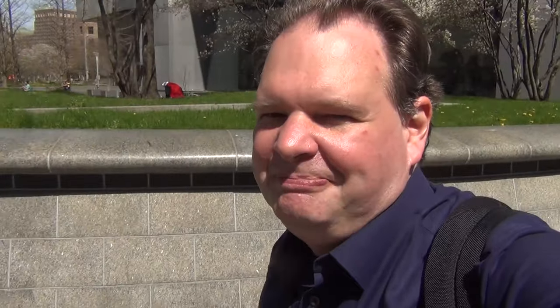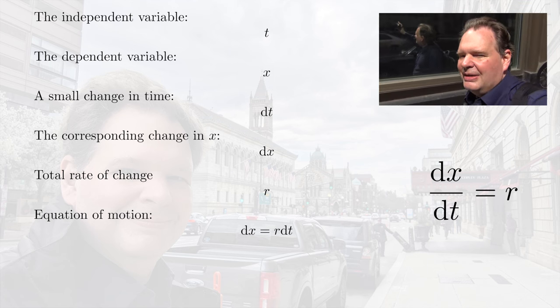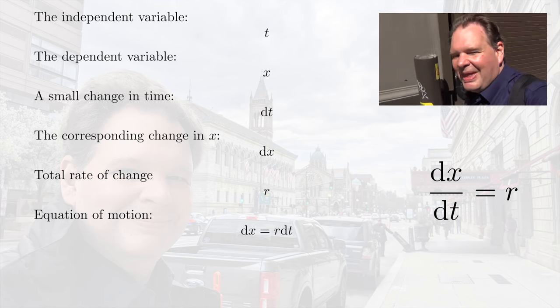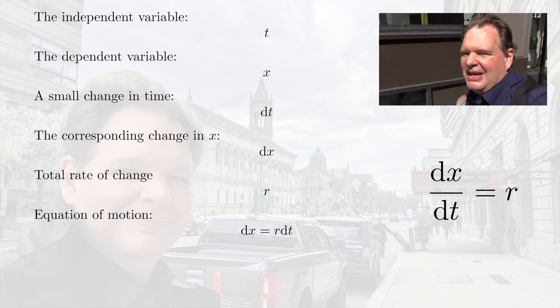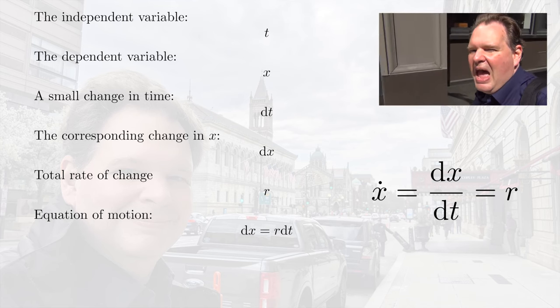You might wonder, isn't it possible that r changes during this time, because x changes and so on? But that's exactly the point of making predictions for a very short time. If our time dt is short enough, then we can neglect the changes in r. We can also divide this whole equation by dt, and then it reads dx/dt = r. So dx/dt is really only another way of writing the rate of change. If dt is small enough, then dx/dt is just the temporal derivative of x as a function of t, and we can also write this temporal derivative as x-dot.